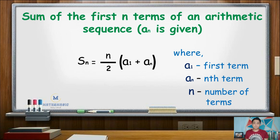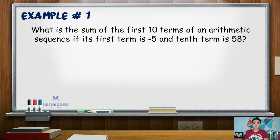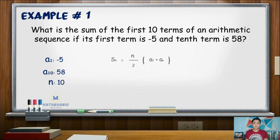Say for example, what is the sum of the first 10 terms of an arithmetic sequence if its first term is negative 5 and the 10th term is 58? As you have noticed, the first term is given — that is negative 5 — the 10th term is 58, and n, or the number of terms that we need to get the sum, is also given, that is 10.